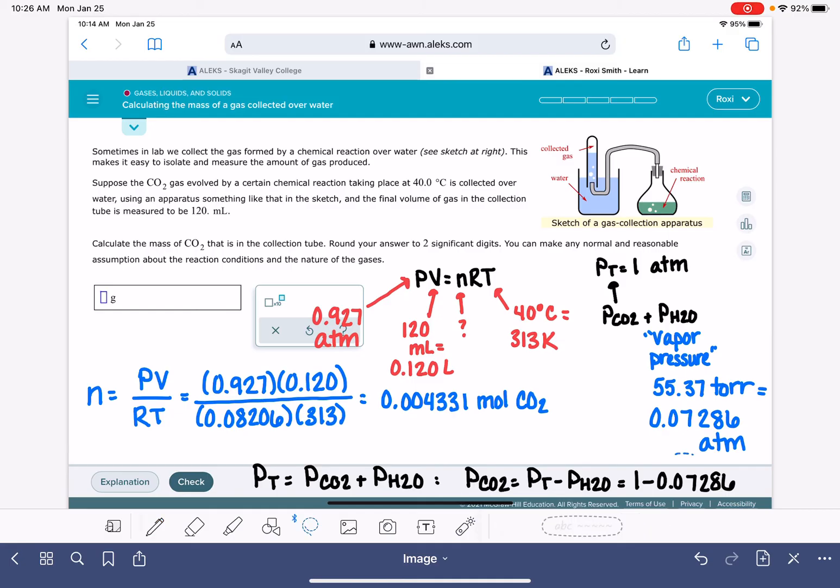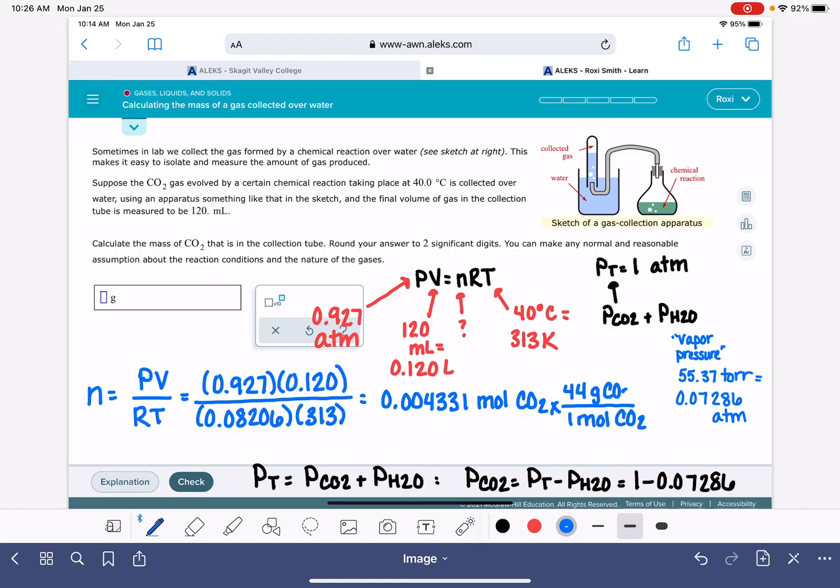So I got 0.004331 moles of CO2. Then I just need to convert that into grams using the molecular weight of CO2. One mole of CO2 is 44 grams. Again, never round molecular weights for ALEKS. It doesn't like it. And I get 0.19, it says two significant digits, so 0.19 grams of CO2.